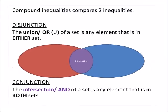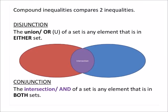Alright, compound inequalities. Let me get this so you guys can see it. Compound inequalities compare two inequalities. Disjunction is just the union. It means that the two don't have to intersect. If it's part of one set of numbers, then it's part of the union.